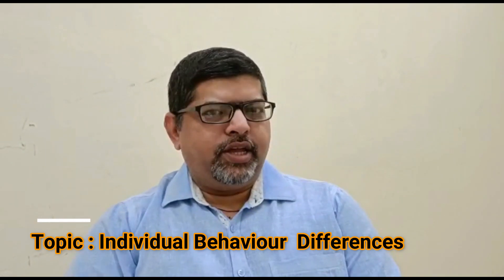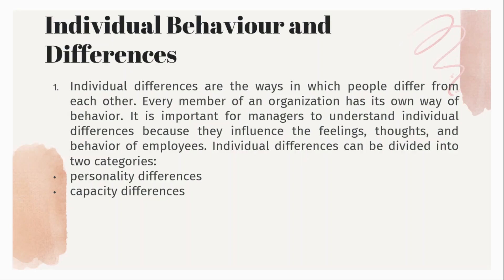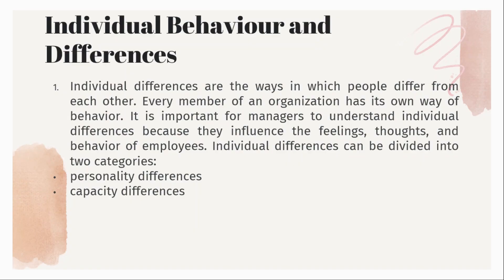So let us start this series today. In this first session we are going to talk about individual behavior and differences. If we are talking about individuals and their behavioral differences, we are here to offer certain objectivity of personality differences and capacity differences. When we talk about individual behavior, we are talking about an individual's narrative in terms of behavior and differences in their behavior because of certain types.